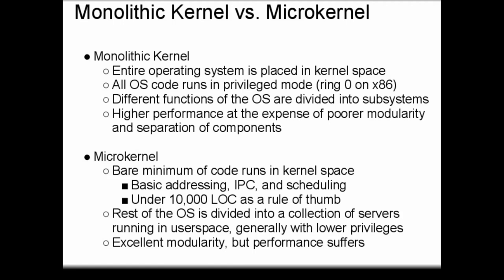The opposite of this — the RC-4000-style kernel — is what we now call a microkernel. A microkernel contains the bare minimum of code necessary to implement basic addressing, interprocess communications, and scheduling. This basic amount of code runs in kernel space, and everything else runs in user space, often with lower privileges. As a general rule of thumb, microkernels contain less than 10,000 lines of code. Microkernel-based operating systems tend to be quite modular, because they divide OS functions between the kernel and a set of servers that run in user space. However, because many core OS functions are performed by user space components that must communicate via the kernel, performance does suffer.